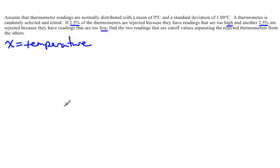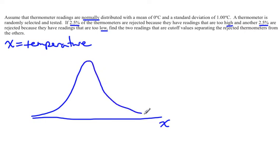It might be helpful to draw a picture. We're told we are normally distributed, so let's draw a normal curve and put in some information we know. The mean is zero degrees, so the center is zero, and the standard deviation is one.